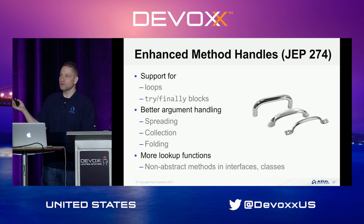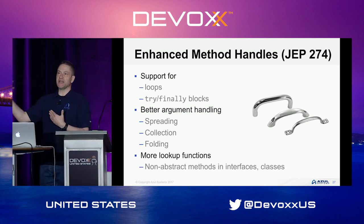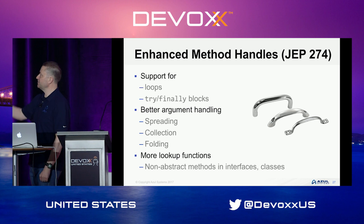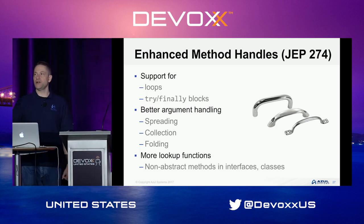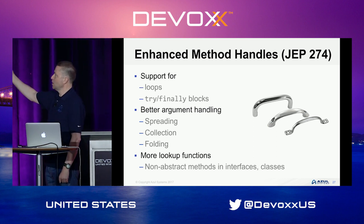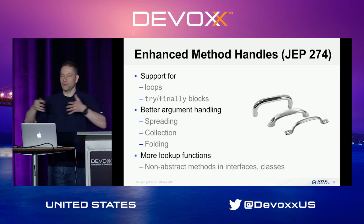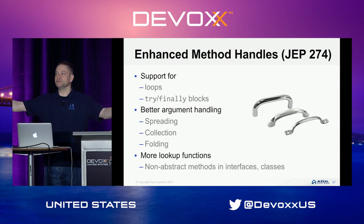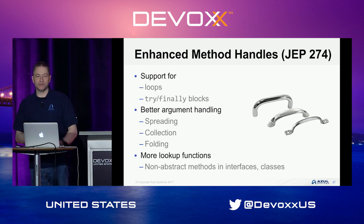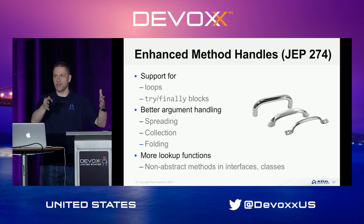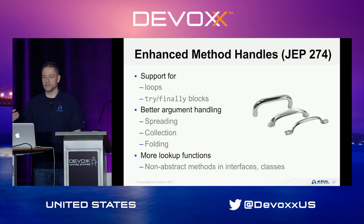Enhanced method handles, introduced in JDK 7, are being extended. There's now support for loops and try-finally blocks using method handles. Different argument handling modes are supported: spreading (taking an array of arguments and spreading them into individual arguments), collection (packaging arguments into an array), and folding (selecting a subset of arguments for operations).